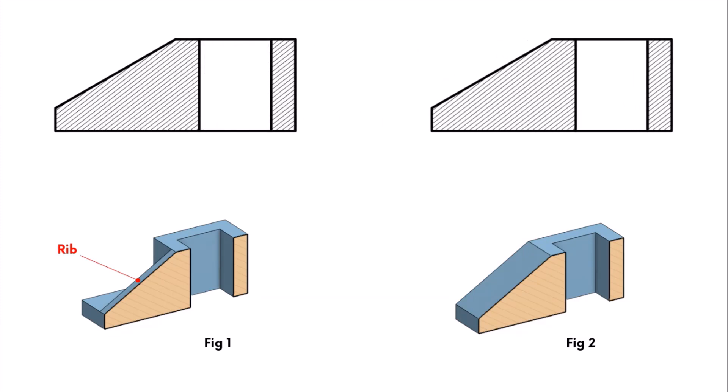It is interesting to note that the sectional front views of both parts look exactly the same. This could lead to an incorrect interpretation, depicting a part with uniform thickness rather than a ribbed part. Therefore, in an effort to make section views more readable, section lining is not applied to the outline of thin features like ribs.